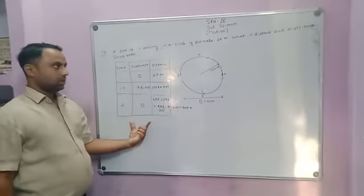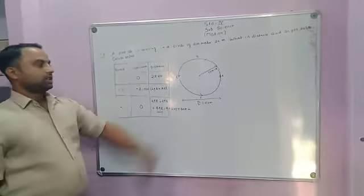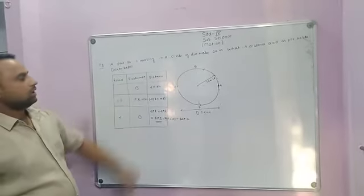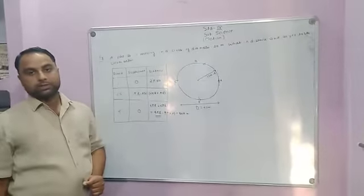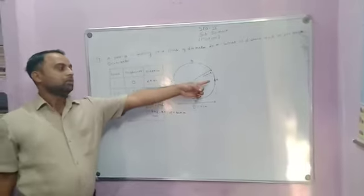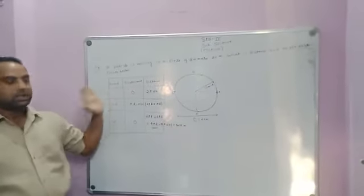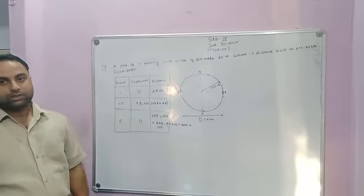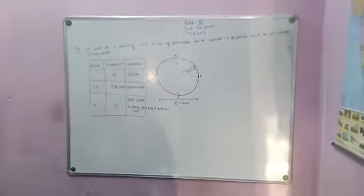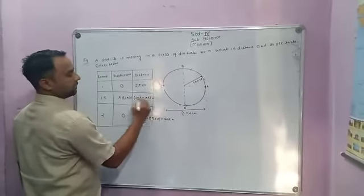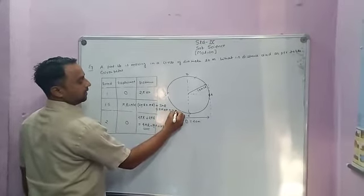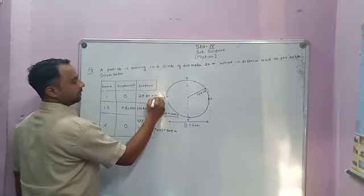These are simple calculations of distance and displacement. This question is based on the concepts of distance and displacement: displacement is the minimum distance between initial and final positions of the particle, while distance is the actual path traveled by the particle. Both distance and displacement are different. For 1.5 revolutions, the distance is 3πr, and with r equal to 10 meters, this gives 30π meters, and the displacement is 20 meters.